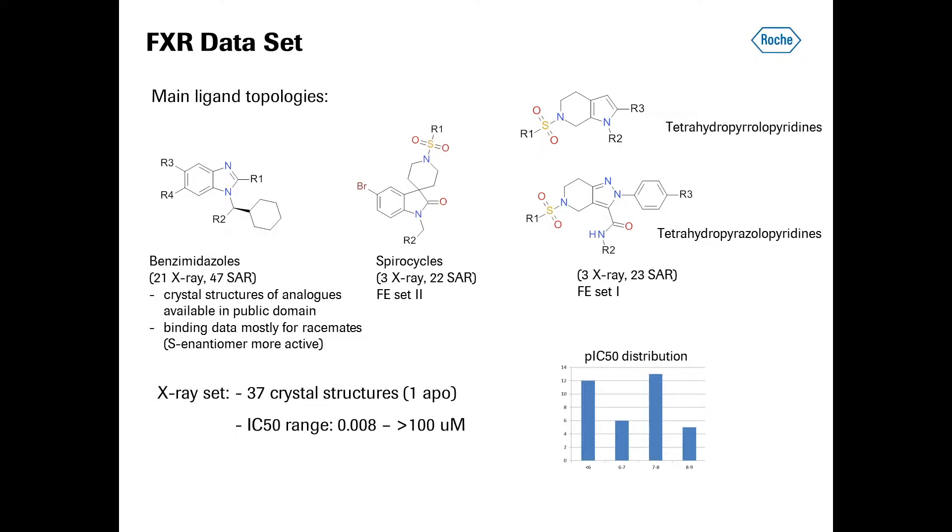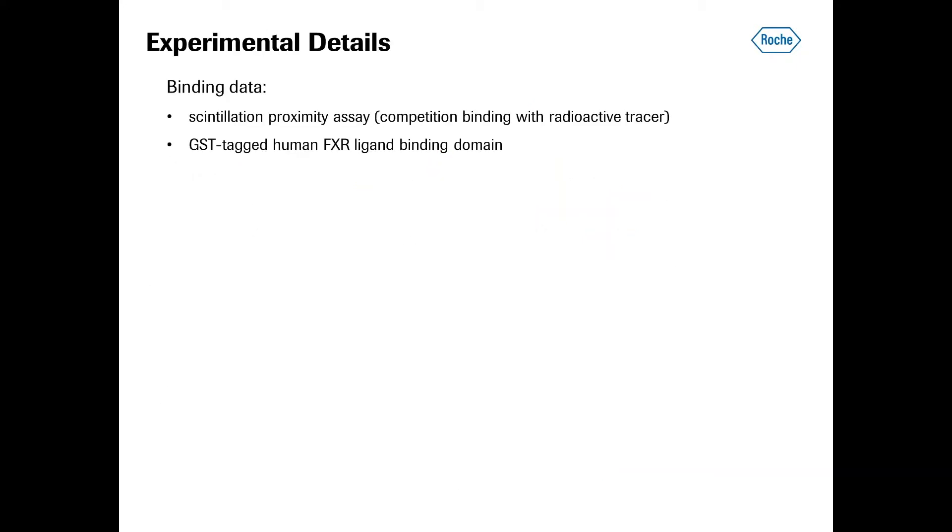Overall, there are 37 crystal structures in the data sets, one of them being the apo structure. The IC50 range for the X-ray set is several orders of magnitude, ranging from 8 nanomolar to more than 100 micromolar. Here on the right, you see the pIC50 distribution. For the data set overall, the SAR for all 102 compounds range from 0.3 nanomolar to greater than 100 micromolar.